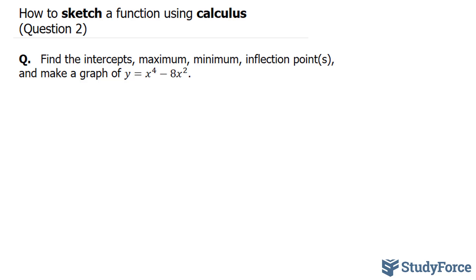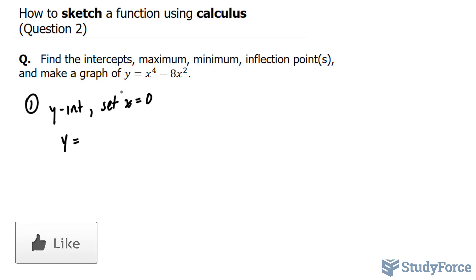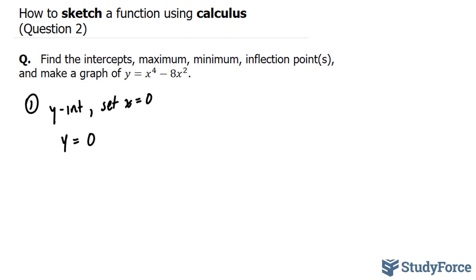This question is very involved and there's a lot of work, so make sure you have enough space to work along with me. The easiest of all these properties is the intercepts, and we'll start with the y-intercept — all that involves is setting x equal to 0. So my first step: the y-intercept, set x equal to 0. y is equal to 0 to the power of 4 minus 8 times 0, so our answer is 0. Our first point to plot is (0, 0).